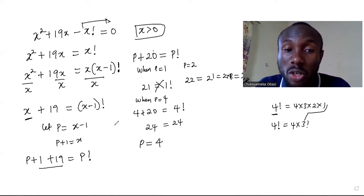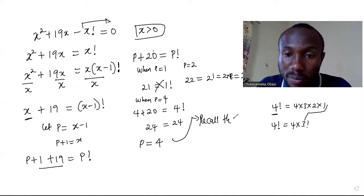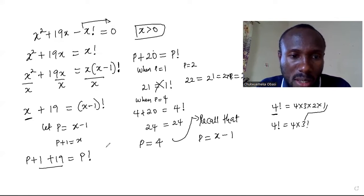And you know we have to find this solution in form of x. So recall that p is equal to x minus 1. Sorry, recall that we've gotten the value of p to be 4, so we plug it right here.